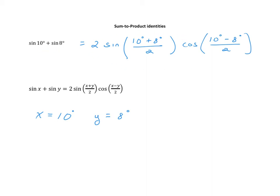Obviously, we can simplify what's inside the parentheses, so I'm going to go ahead and do that. This is equal to 2 times sine of—that's 18 over 2, that's 9 degrees—and then we have cosine of 10 minus 8 is 2 degrees, and 2 divided by 2 is 1 degree. And here, we have taken a sum and changed it into a product.